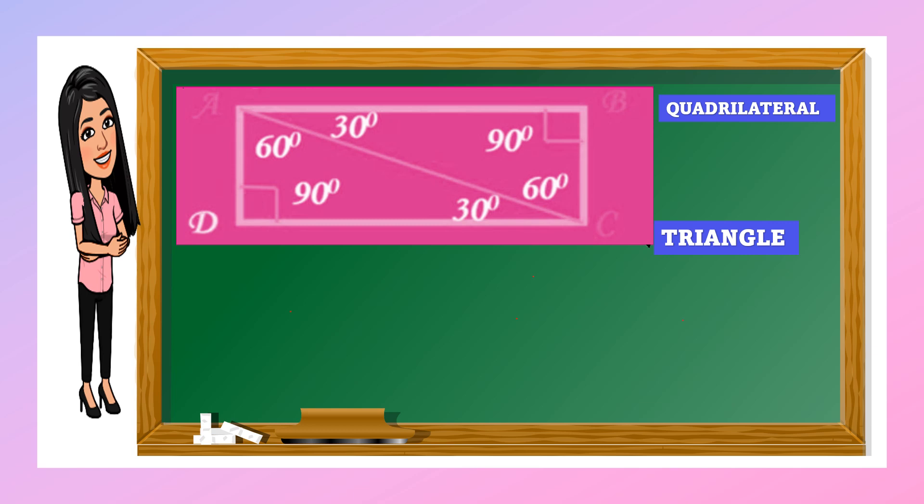Here we have one triangle that measures 180 degrees, and the other one also measures 180 degrees.